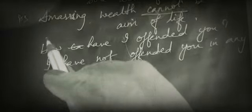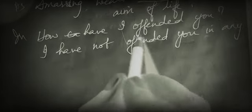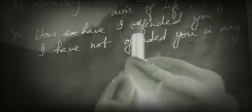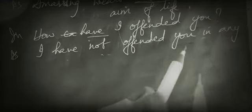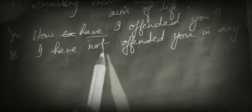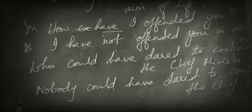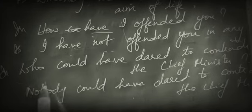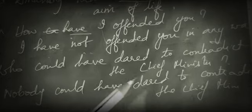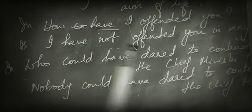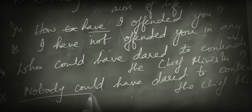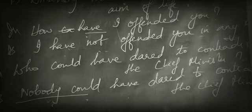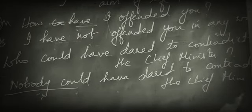'How have I offended you?' becomes 'I have not offended you in any way' — 'have' becomes 'have not,' giving the negative form. Another example: 'Who could have dared to contradict the Chief Minister?' changes to 'Nobody could have dared to contradict the Chief Minister,' changing into the negative form with 'nobody.'